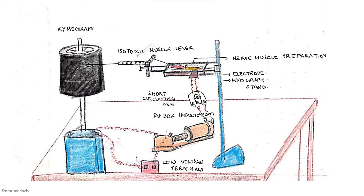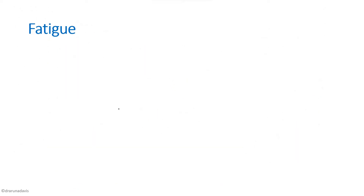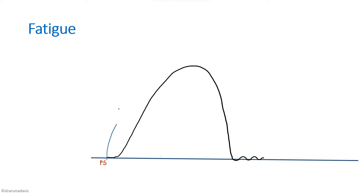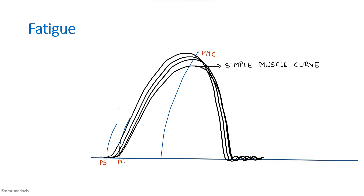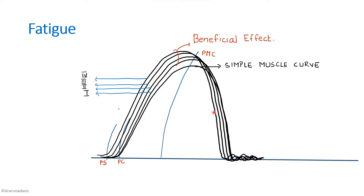The experimental setup is the same as that of a simple muscle twitch. The only difference is that we continuously stimulate the nerve muscle preparation until it gets fatigued. When we draw the graph, we first draw the simple muscle curve and mark its points of stimulation and contraction. The next few contractions will be seen to have a greater amplitude because of the beneficial effect. After the simple muscle curve, the next contractions will have a lesser latent period, greater amplitude, lesser contraction period, and a lesser relaxation period — all due to beneficial effect.